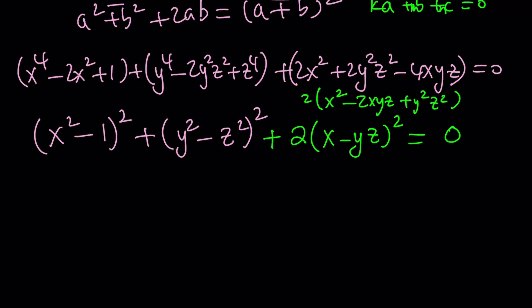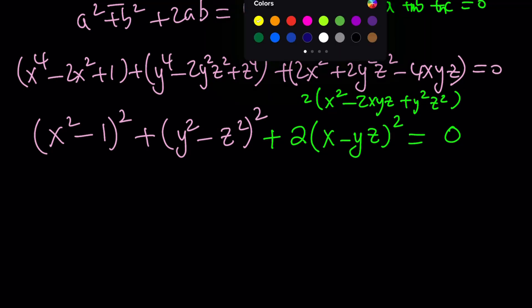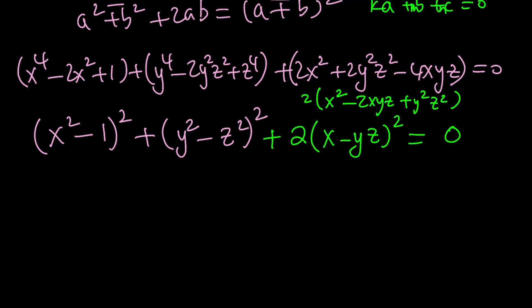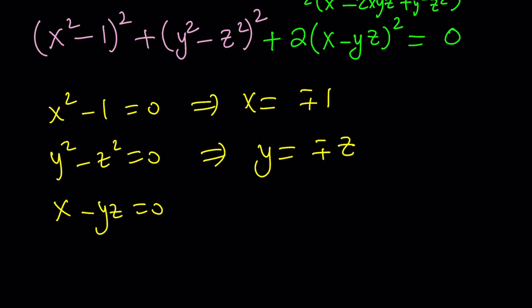Now, from this equation, we get three different equations. And why are we getting three equations from here? If one of these is not 0, then it has to be positive, because it's a perfect square. And if one of these is positive, another one must be negative, because their sum is 0, but no square can be negative. That's why they all have to be 0. So from here, we get x squared minus 1 equals 0, which means x equals plus minus 1. And then, y squared minus z squared equals 0, which means y equals plus minus z. And the third one tells us x minus yz equals 0, which means x equals yz.